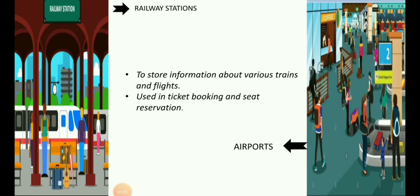Our next topic is railway stations and airports. Do you know why computers are used in railway stations and airports? They are used to store information about various trains and flights — the timing, when a train will start from a place and when it will reach its destination. Everything is stored, including how many passengers there are and where they are coming from. Even we can book tickets and reserve seats. Nowadays, we don't need to go to the railway station to book a ticket — we can do it from our mobile phone or from our computers. So computers are used here also to store large amounts of data.